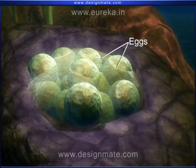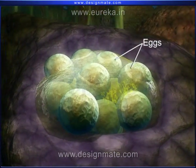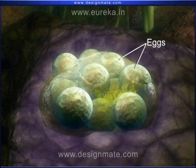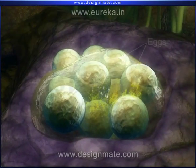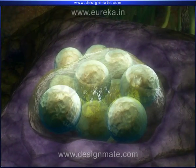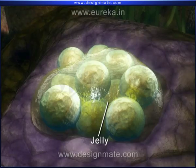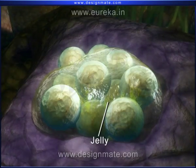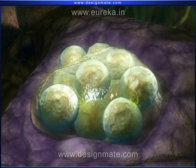The eggs of the frog are found in clusters, laid in water. The eggs stick to each other by a jelly, and this whole cluster of eggs is called the spawn.